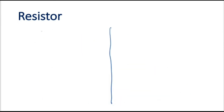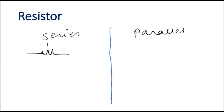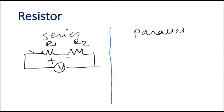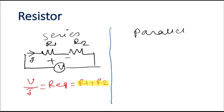Most of the time we encounter series connection and parallel connection. When two resistors R1 and R2 are connected in series, with applied voltage V, a current of I amperes will pass. V divided by I is R equivalent, which is R1 plus R2. This is basically the equivalent resistor between terminals A and B, which equals R1 plus R2.